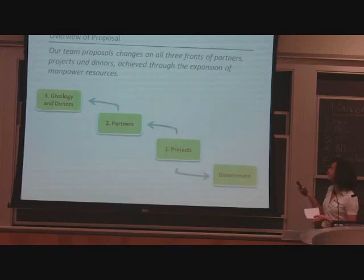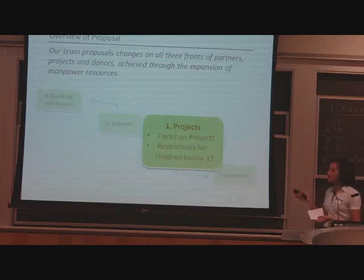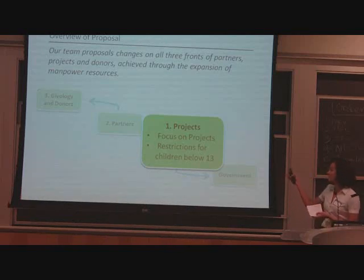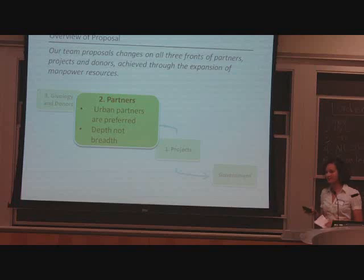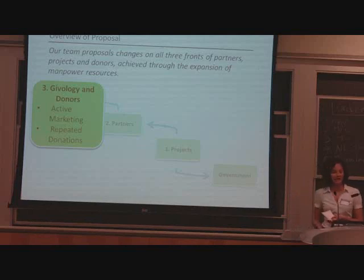Our proposal affects all three portions of Giveology. We want to affect the projects, the partners, and the donors. On the projects, we want to make sure to put the focus on projects and not individuals, because they affect more students. We also want to make age restrictions. In terms of the partners, we want to focus on urban partners, and also on breadth within countries as opposed to depth among countries. And in terms of the donors, we want active marketing and repeated donations. Now our partners are going to talk about each of these three principles in more depth.